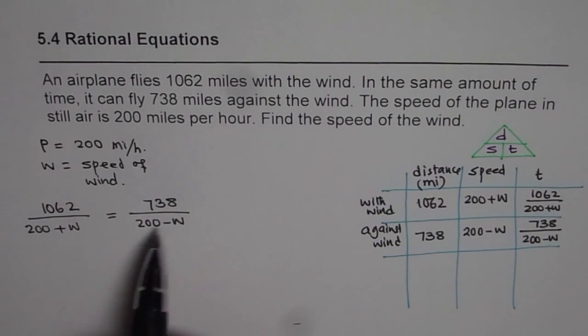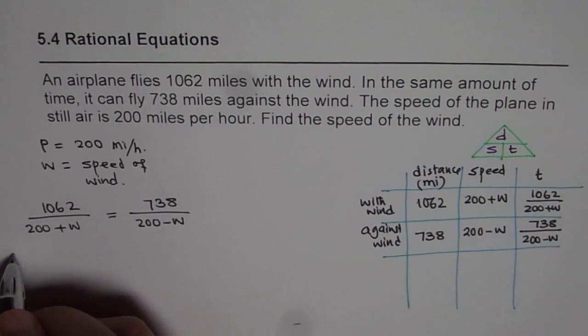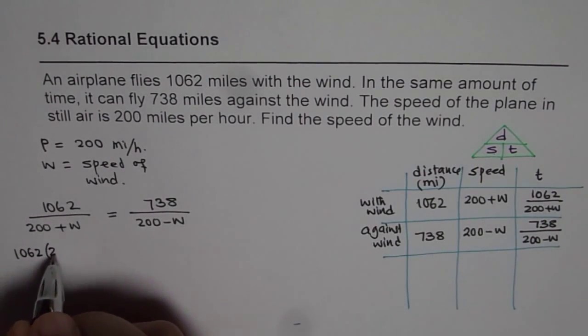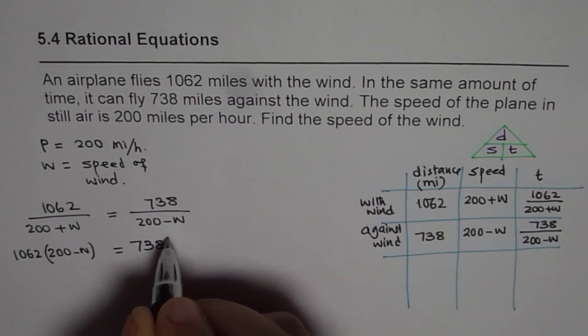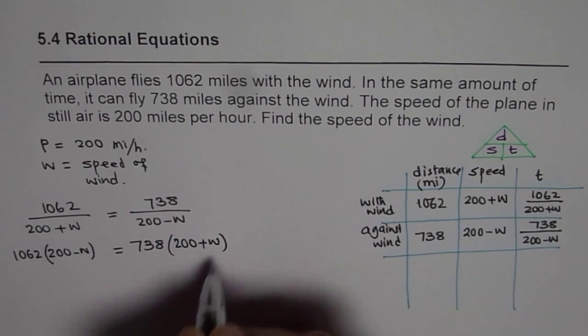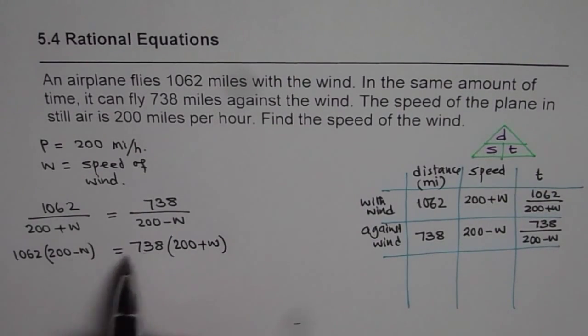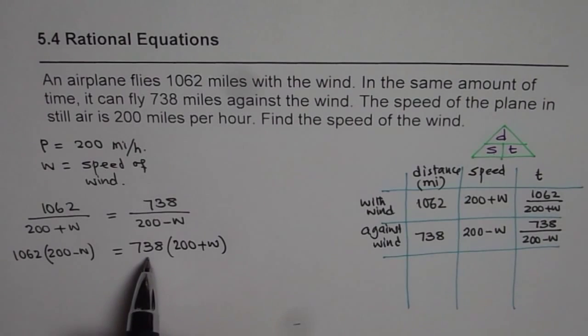Now we know wind speed cannot be 200. That is one restriction. Now to solve it, it is kind of a ratio. We will cross multiply and then solve. So we have 1062 times 200 minus w equals to 738 times 200 plus w. Now these are common numbers. If you want you can divide one by the other and simplify that also. Now that can be done. But I am not going in there. So what I will do here is I will just expand and then simplify.